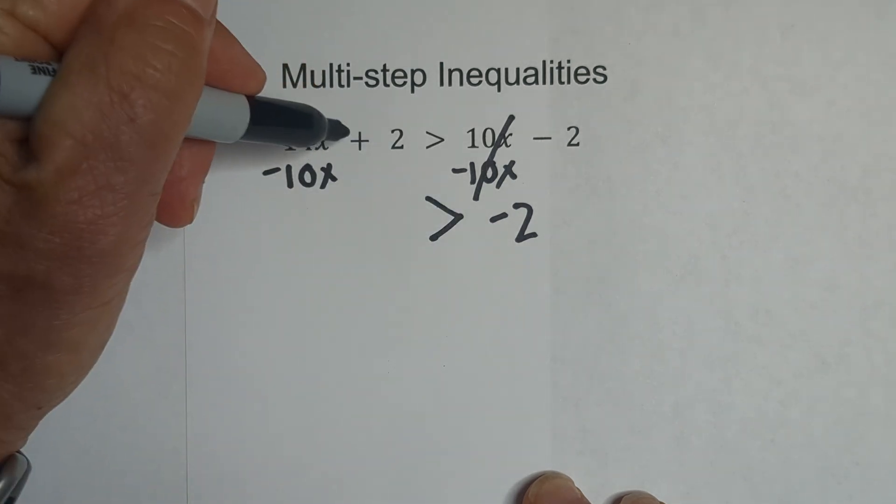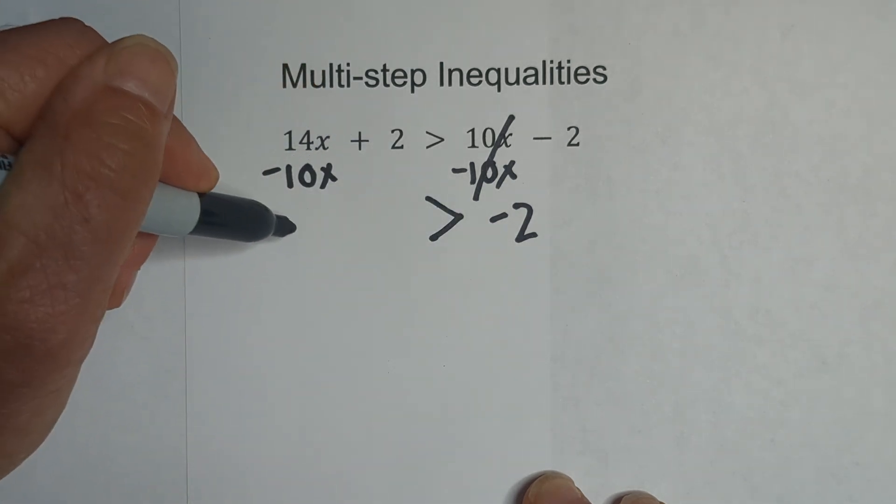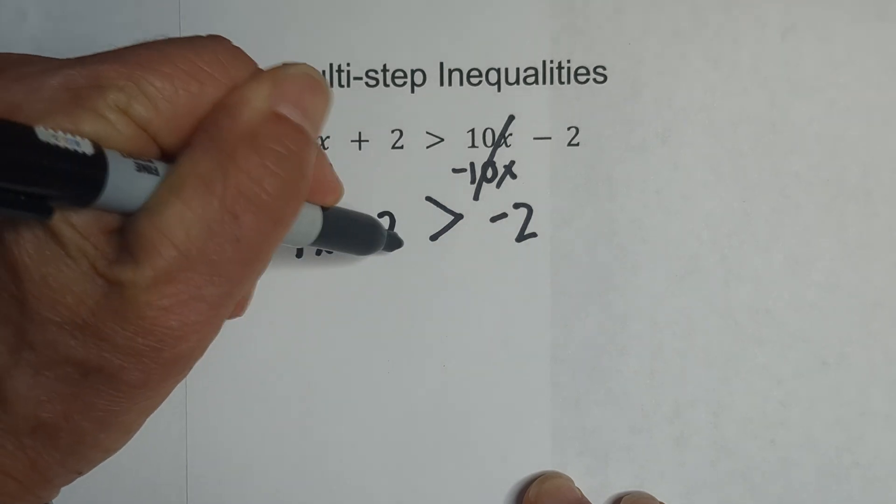Inequality stays the same. 14 minus 10 is 4x plus 2.